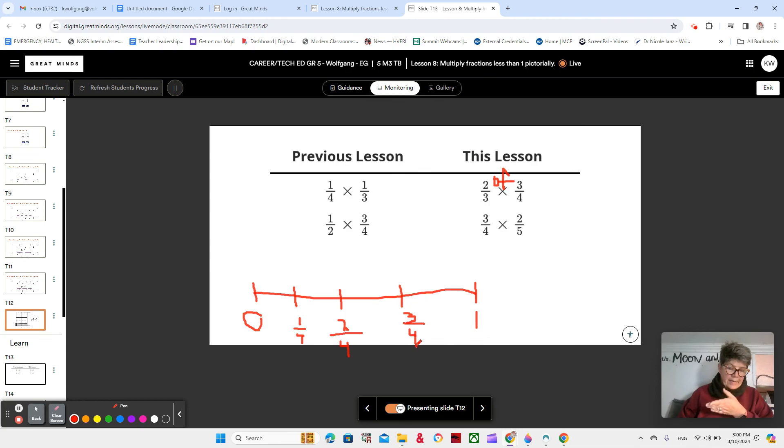How can we use this number line to represent 2/3 of 3/4? We already have our fourths, right? We can partition each of the 3 fourths into 3 equal parts. So that we can show thirds of our fourths. Okay? So let's get a different color for that. And 2 lines makes 3 parts.